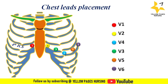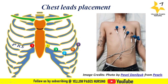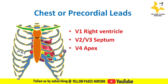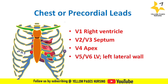The reason chest leads are placed at these specific positions is that V1 covers the right ventricle, V2 and V3 cover the septum, V4 covers the apex, and V5 and V6 cover the left ventricle and left lateral wall — together recording the overall electrical activity of the heart.